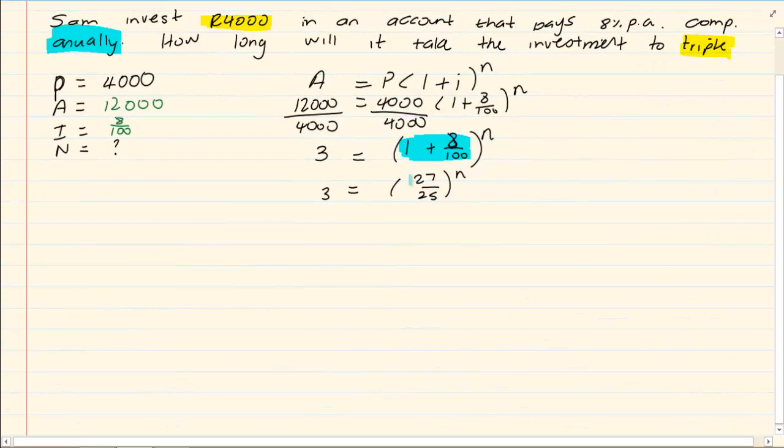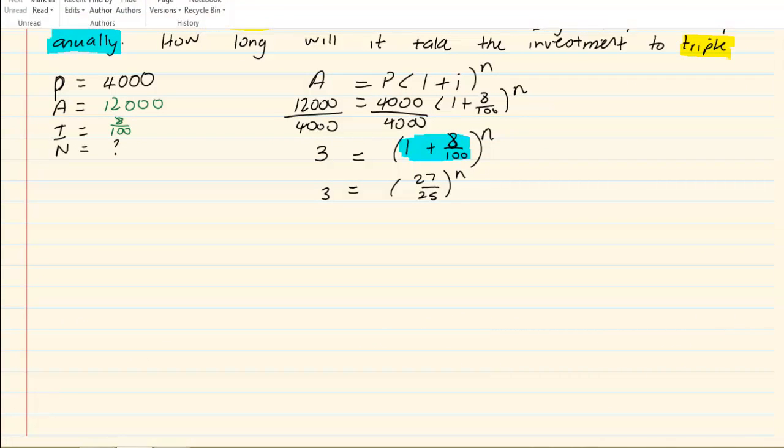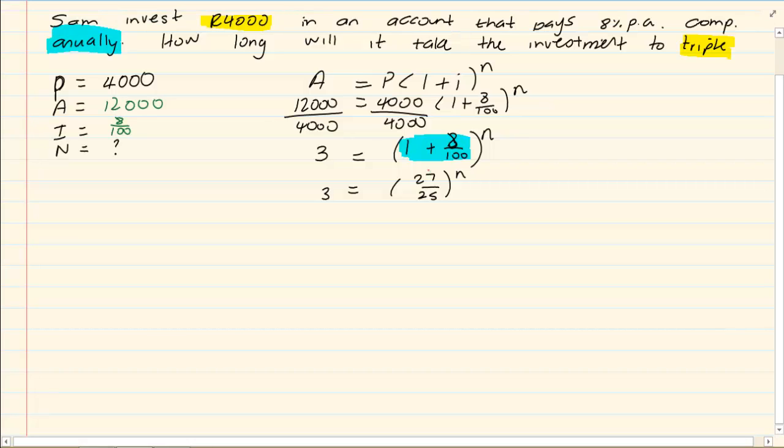Now we have got another funny number, 27 over 25. How are we ever going to make it to the base of 3? So what we do when we are doing this: Number 1, you are going to put a log on both sides.